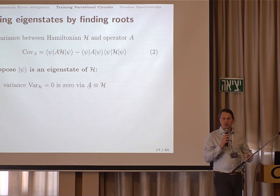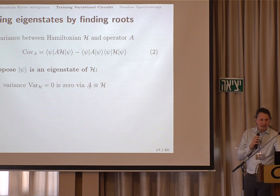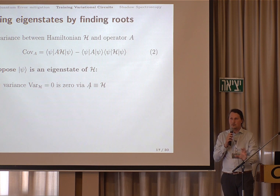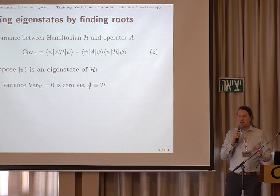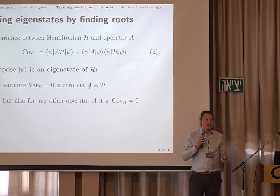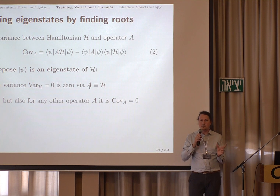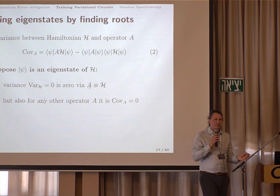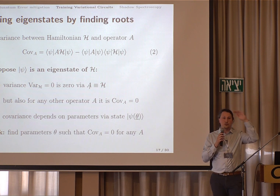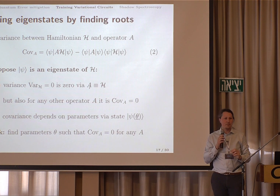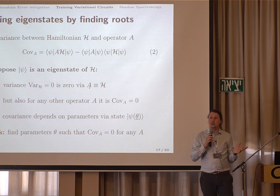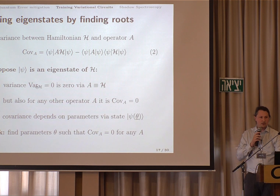The details are non-trivial, and the idea is significantly different from VQE because it's not even a minimization problem anymore — it's based on so-called covariances. The definition of an operator covariance: given a Hamiltonian that's the problem you want to solve and you want to find its eigenstates, we define covariances with respect to any operator A. If A equals H, the covariance is just the expected value of the square of the Hamiltonian minus the square of the expected value — that's the standard variance from classical statistics. The covariance generalizes that by looking at how different operators correlate with the Hamiltonian. We know that if we are in an eigenstate, the variance must be zero, and it's easy to prove that any covariance must be zero as well. This defines an exponentially large number of constraints that any eigenstate must satisfy.